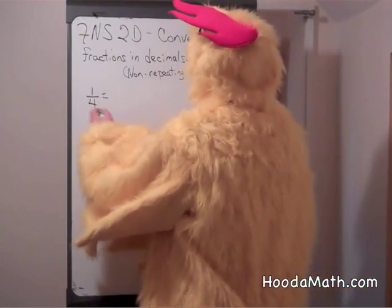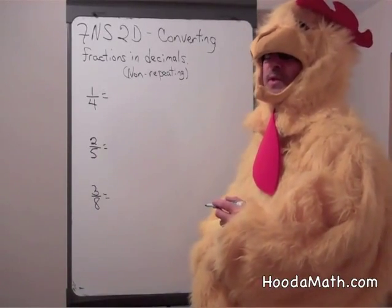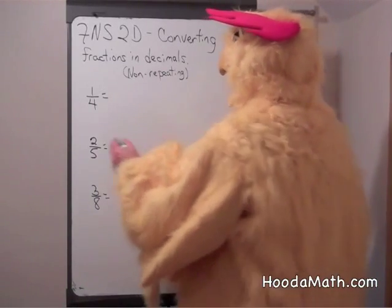The line between the one and the four, or the numerator and the denominator, means that we can divide. It signifies division.